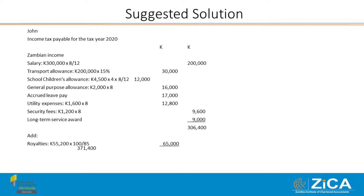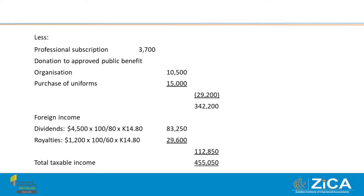Adding Zambian investment income: bank interest is exempt from tax for individuals (rate is 0%, final tax). We add only royalties — 55,250 kwacha net; since it is net we gross it up by multiplying by 100/85, giving a gross figure of 65,000 kwacha. Deductible allowances incurred by John include: professional subscription (allowed), donation to an approved public benefit organisation (allowed), and purchase of uniforms (allowed). Total allowables come to 29,200 kwacha.